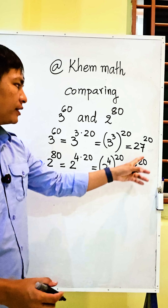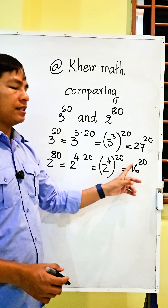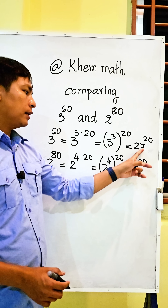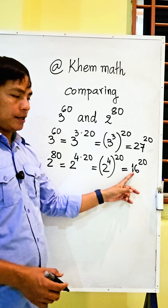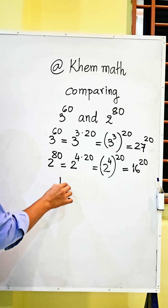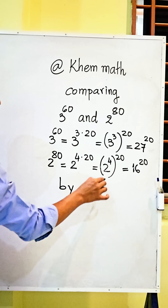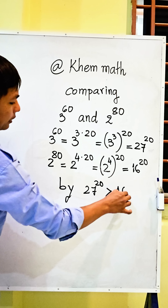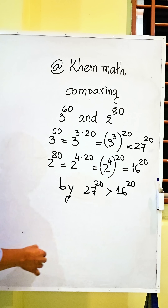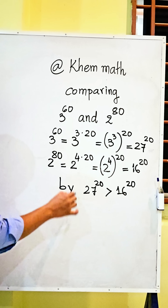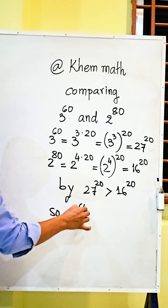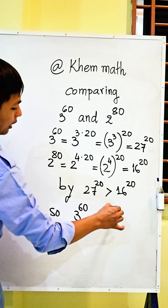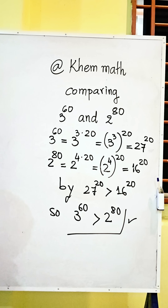Look here — both have the same exponent of 20. So we simply compare the bases: 27 is bigger than 16, therefore 27 power 20 is bigger than 16 power 20. So 3 power 60 is bigger than 2 power 80. That is our answer.